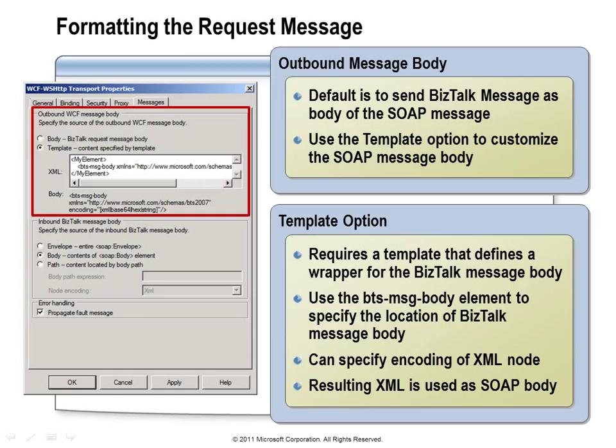When sending messages out, we have the option to send the BizTalk message as the body — the default option. Or if you need to wrap XML around the BizTalk message content, you can use template mode, using the BTS message body placeholder to specify where in the template the actual BizTalk message content goes. This is in addition to maps or transforms you might apply using standard BizTalk send port configuration.